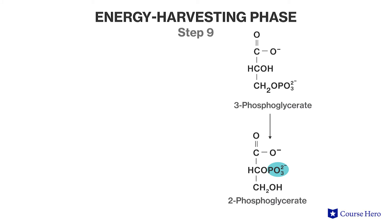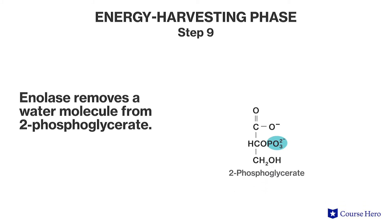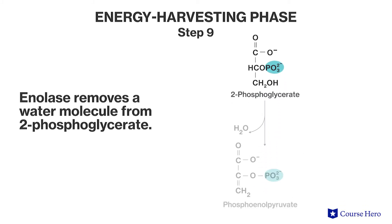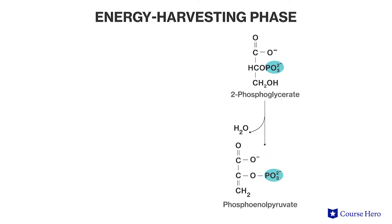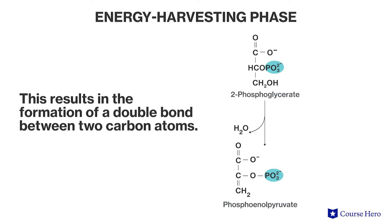Step nine: enolase removes a water molecule from 2-phosphoglycerate. This results in the formation of a double bond between two carbon atoms. Phosphoenolpyruvate is also produced.